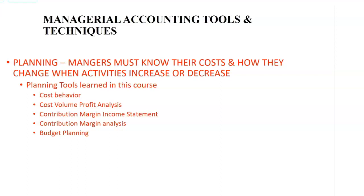The planning tools in this course include cost behavior — you have to know how costs will change when you want to increase sales. That leads to cost-volume-profit (CVP) analysis, a valuable technique for predicting profit at different levels of activity. We also rearrange the income statement into a contribution margin income statement, allowing contribution margin analysis, and lastly budgeting — all important tools for the planning role.